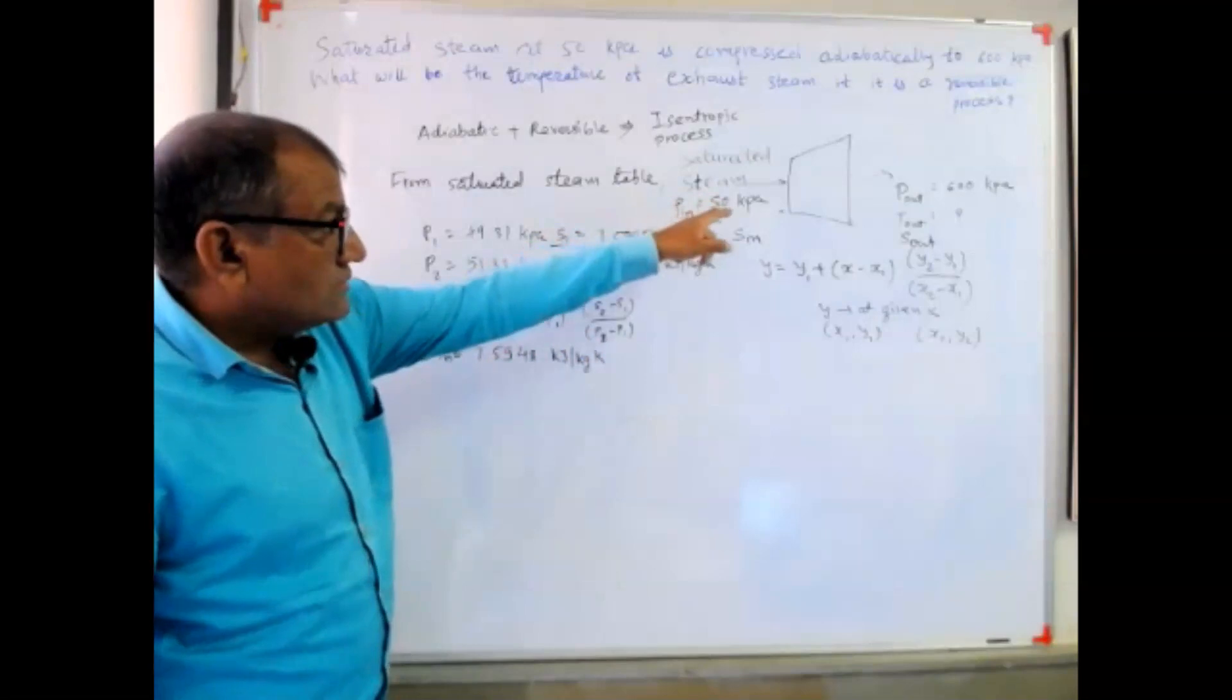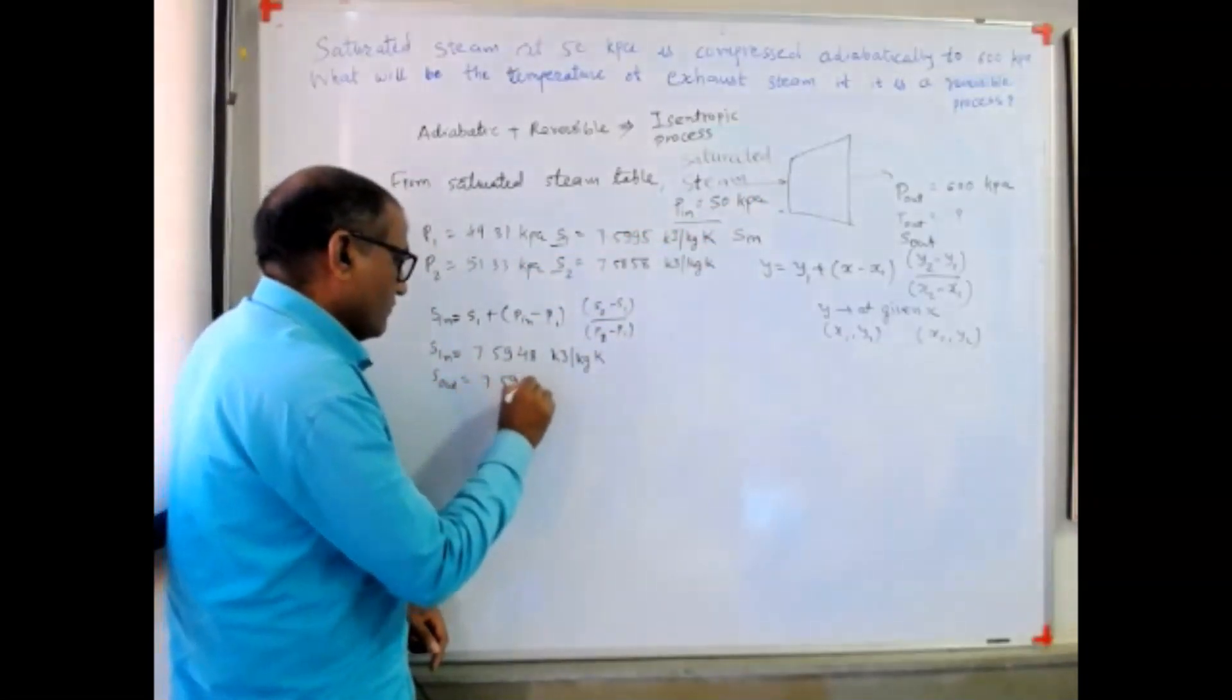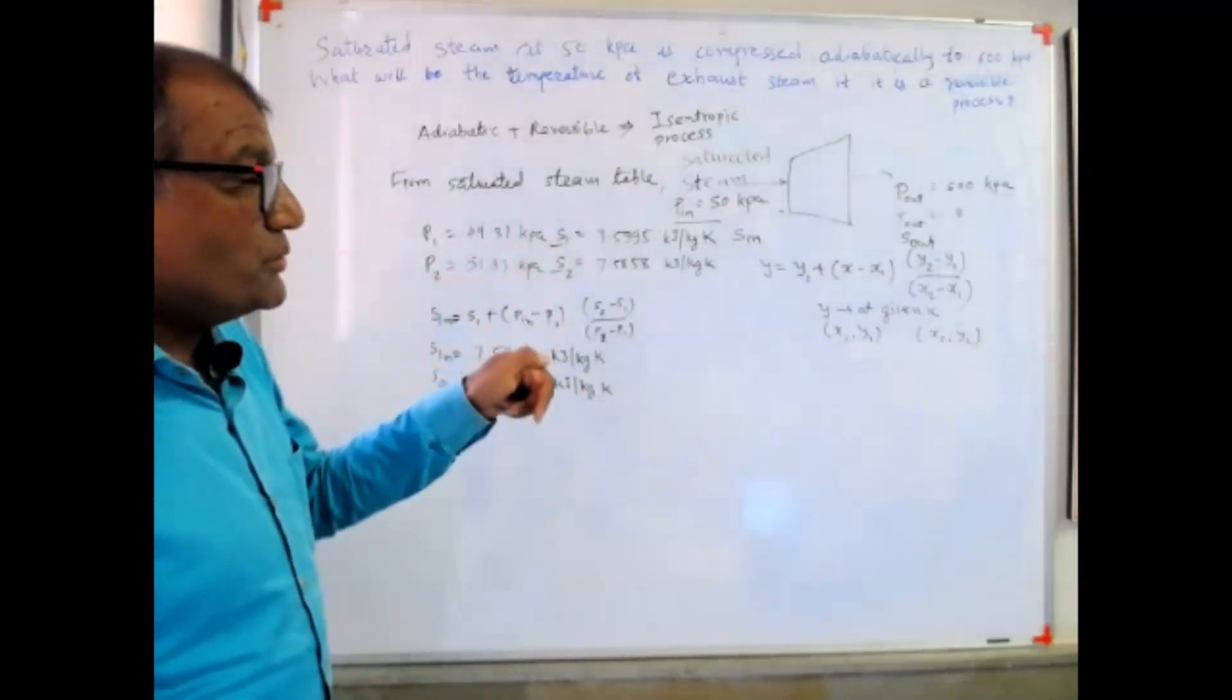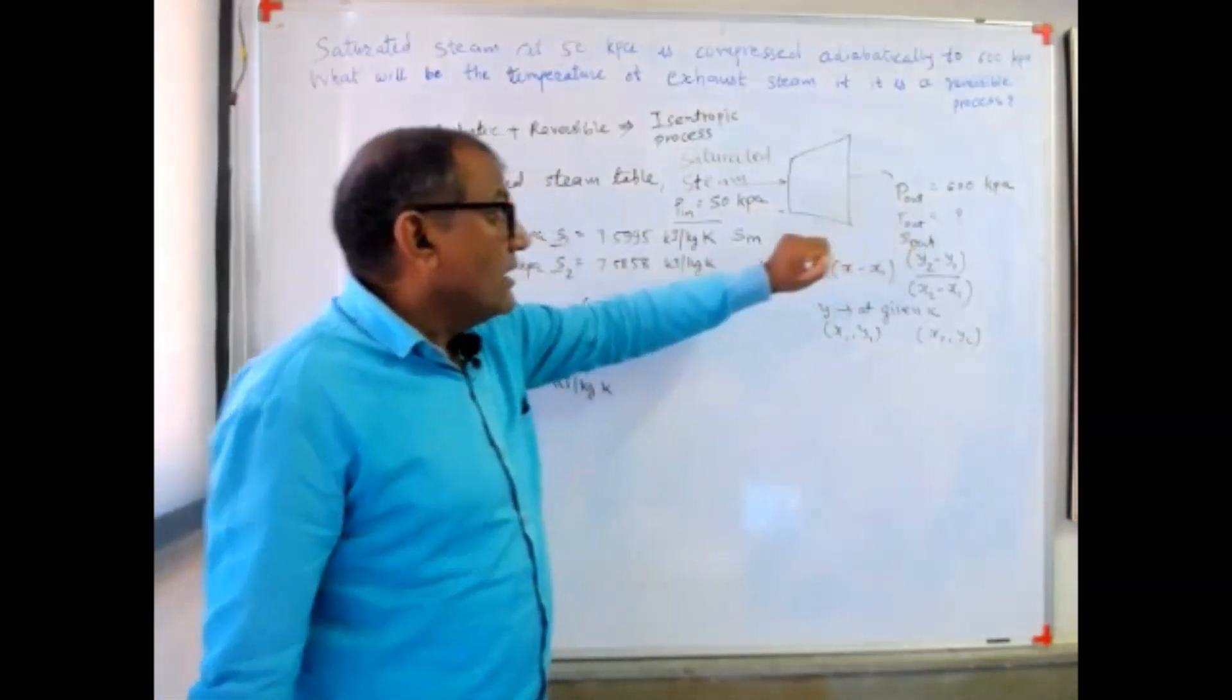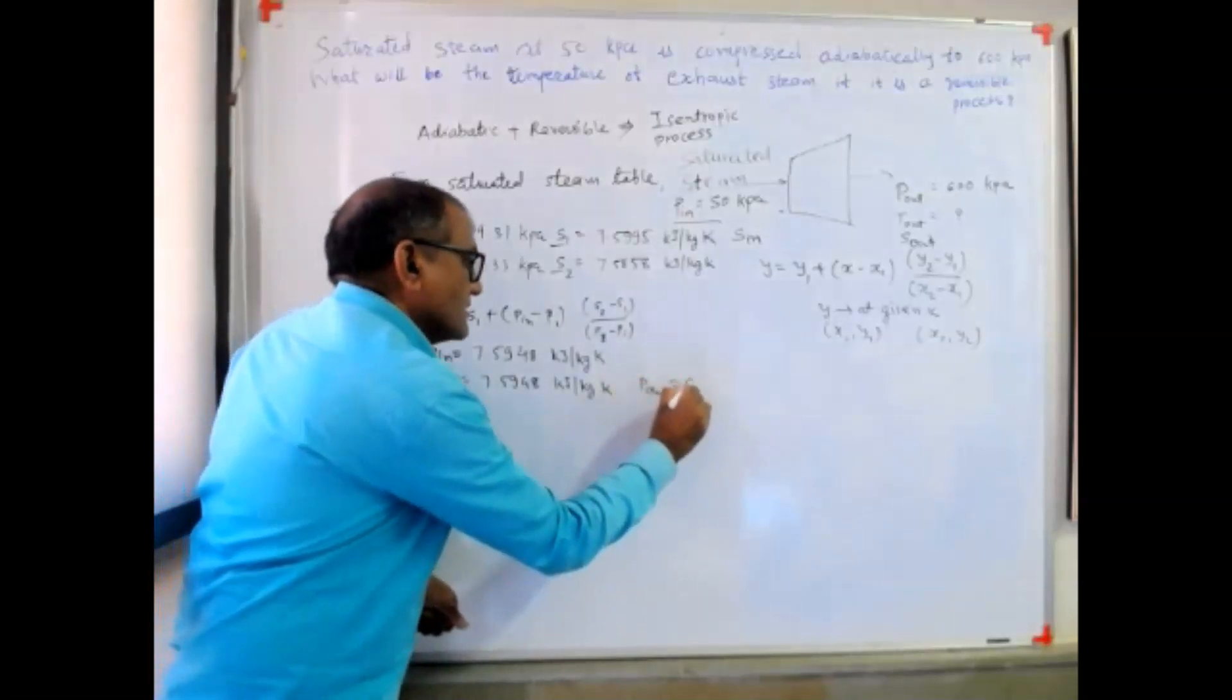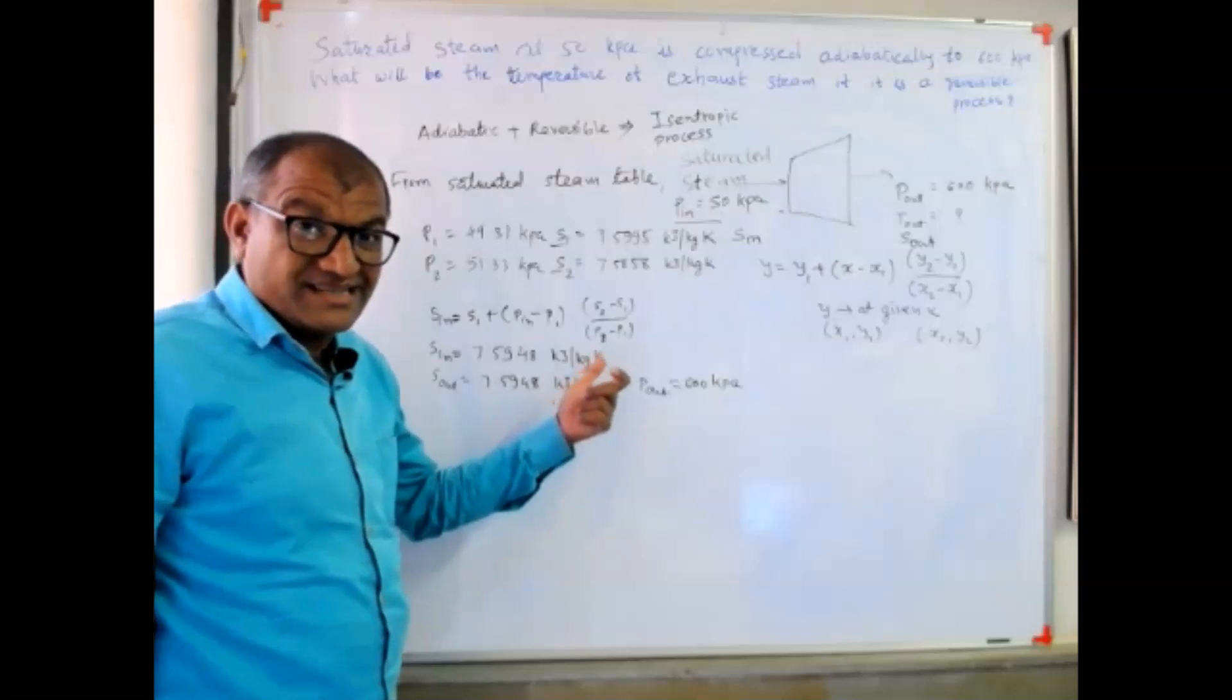Now since this is an isentropic process, this is equal to s_out. I want to calculate outlet temperature. I can use superheated steam table because p_out is given - 600 kilopascal - and s_out is also calculated, that is 7.5948 kilojoule per kg Kelvin.